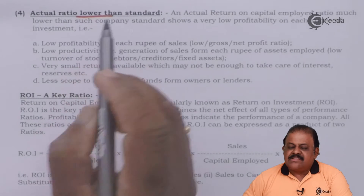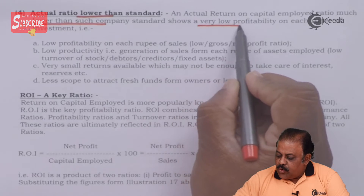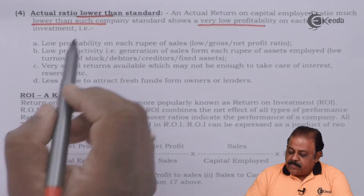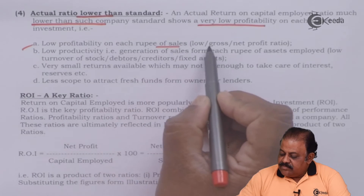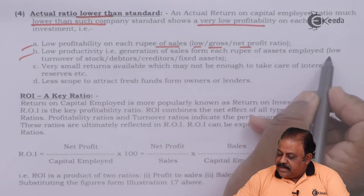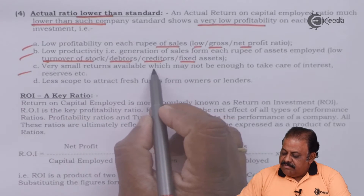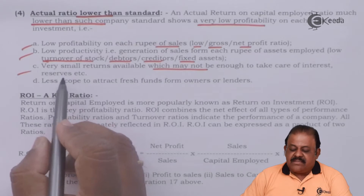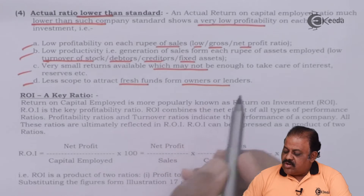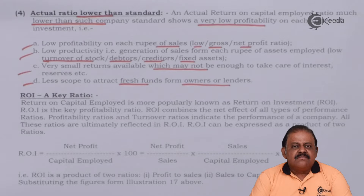Actual ratio lower than standard: A return on capital employed much lower than the company standard shows very low profitability on each rupee of investment — low profitability on each rupee of sales, low gross or net profit ratios, low productivity in generating sales from each rupee of assets employed, low turnover of stock, debtors, creditors and fixed assets, very small returns which may not be enough to cover interest and reserves, and less scope to attract fresh funds. The company cannot make investors or lenders happy, so there will be less scope to raise further funds.